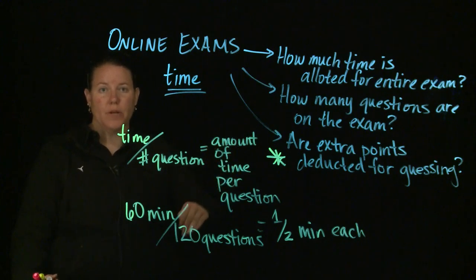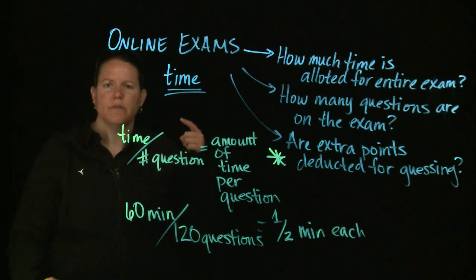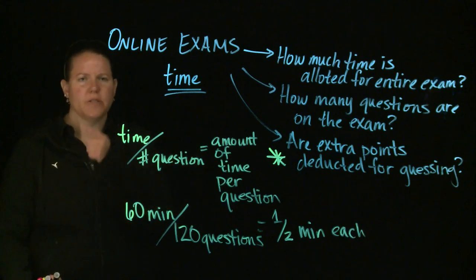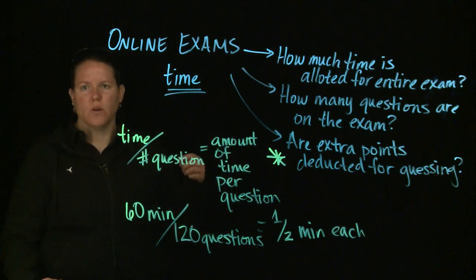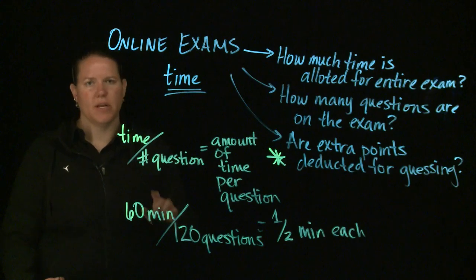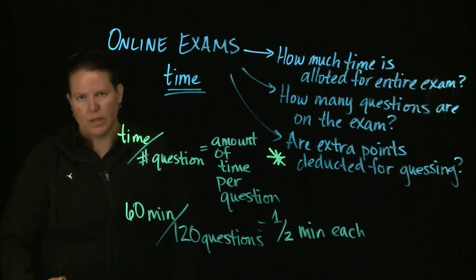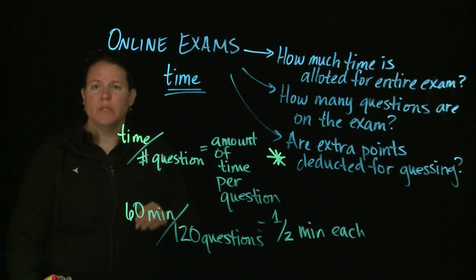So within that 30 seconds, you must decide, can I answer this easily? And if you can answer it easily, you know the correct answer, you can do it quickly, then you answer it. And you save time for questions that you don't know as well. So you do it, you do it quickly, that's the best of all worlds. You know the answer, it's going to be the correct answer, and you can do it quickly. You answer it, great.